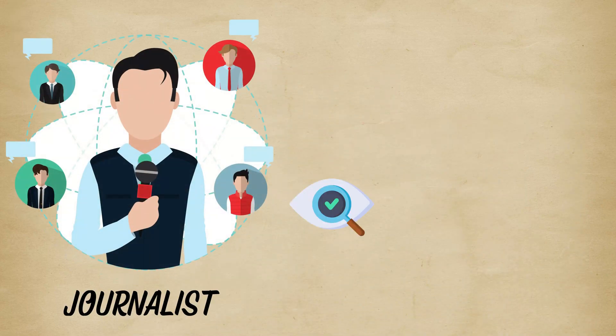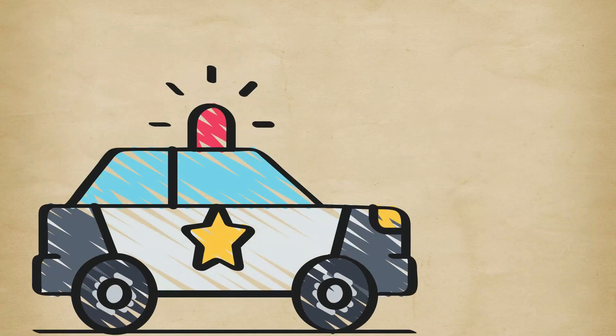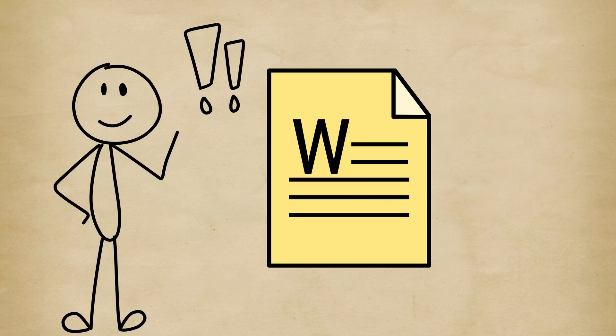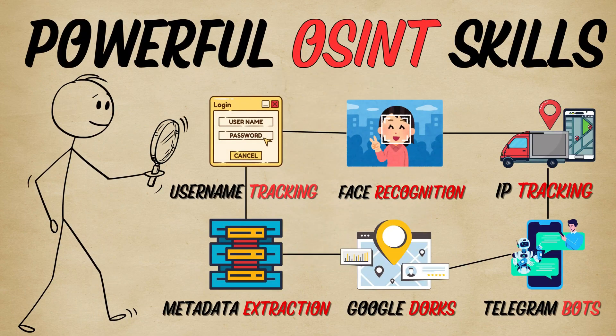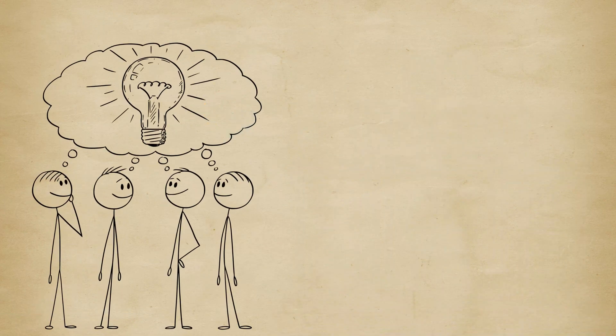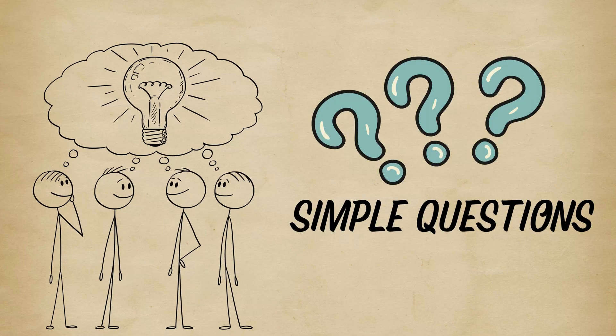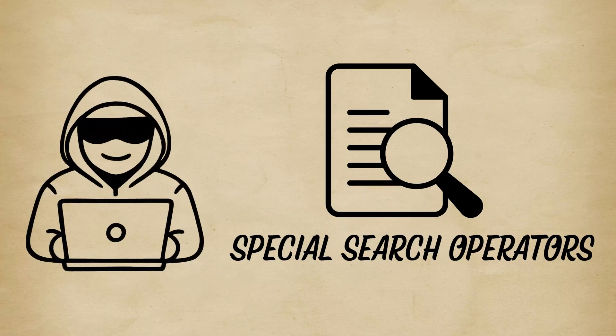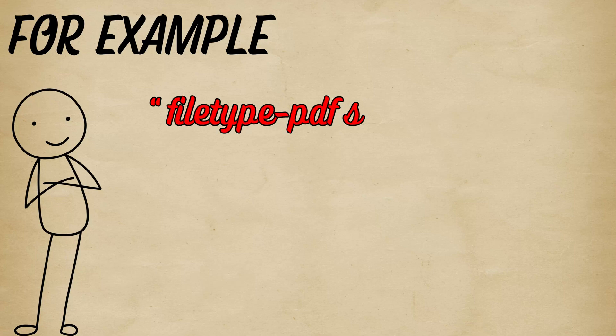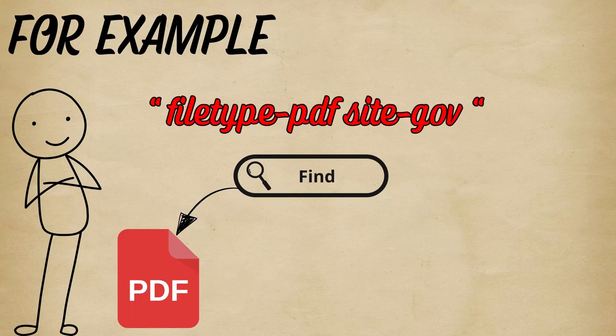Journalists have exposed criminals this way, and law enforcement has tracked fugitives. But here's the catch. Even your personal Word documents might contain the author name and company you work for. Next up, Google dorks. Think of Google as a giant library, but most people only know how to ask it simple questions. Ethical hackers use special search operators to dig deeper. For example, file type PDF site gov finds PDF documents on government sites.